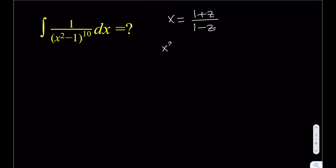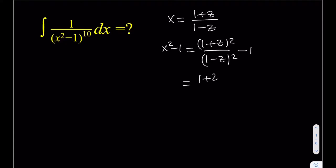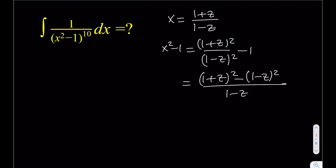Let's calculate x² - 1 from this substitution. That gives (1 + z)² / (1 - z)² minus 1. Making a common denominator, the numerator becomes a difference of the form (a + b)² - (a - b)², which always equals 4ab. So we get x² - 1 = 4z / (1 - z)².